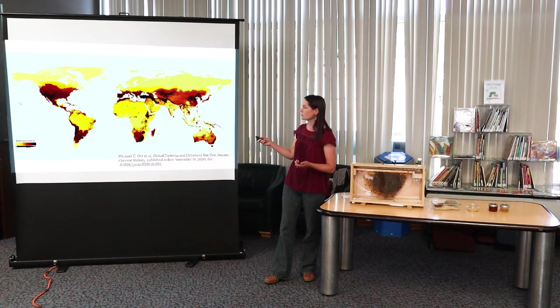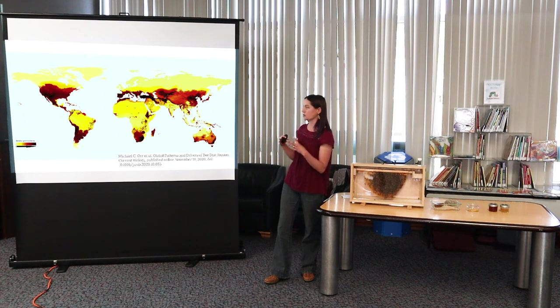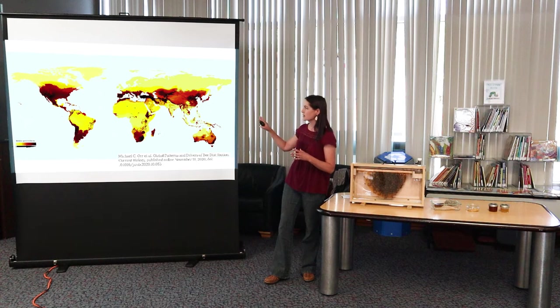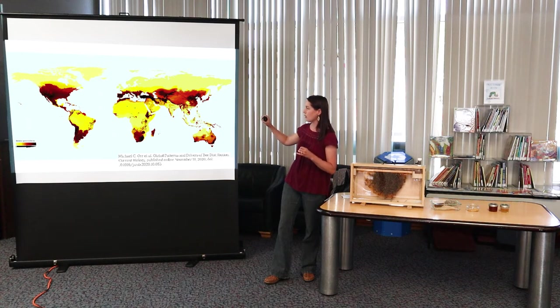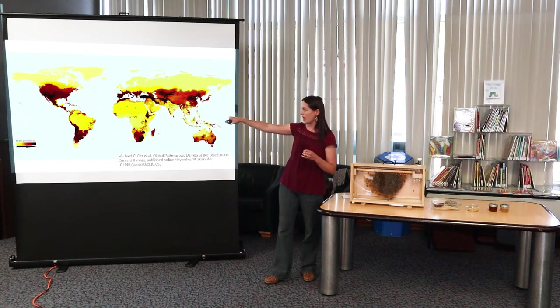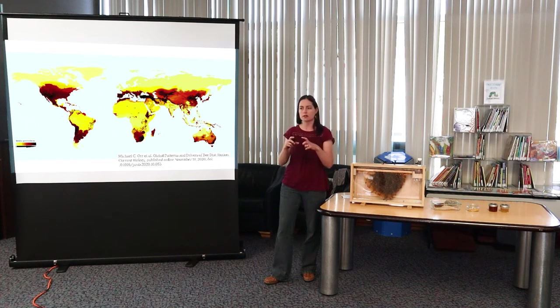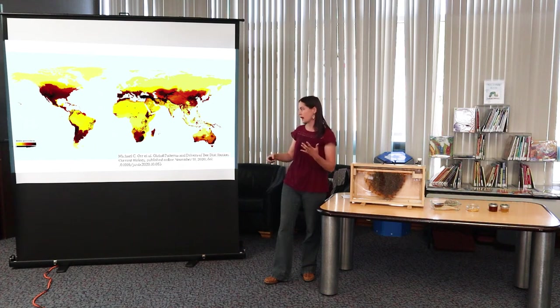But anyway, so this is a map and I'll tell you in a second why we have so much diversity here. But this is a really cool map of bee diversity concentration. So the yellow areas have a few species, and then it gets orange, red, and then that dark, almost black color is where there's the most species of bees. And if you look at where New Mexico is, we're that really dark area.